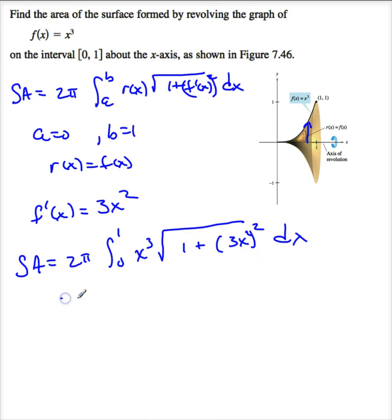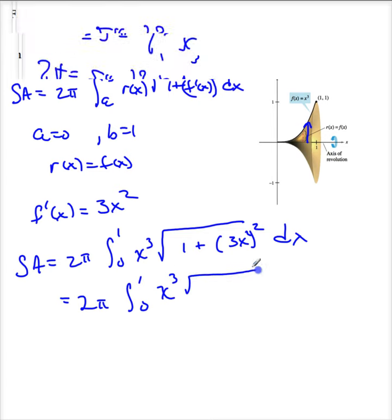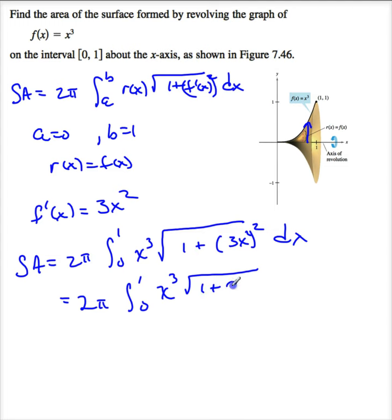Alright, so if I look at this, this is 2π, the integral from 0 to 1, x³ times the square root of 1 plus 9x⁴ dx.